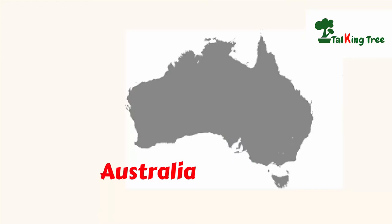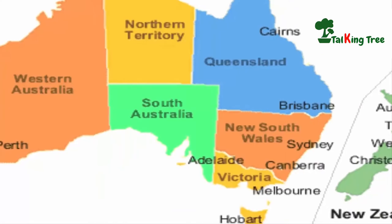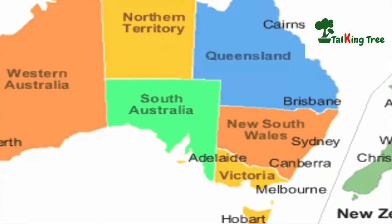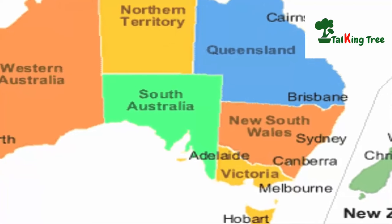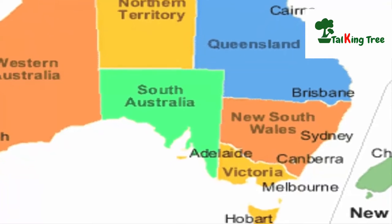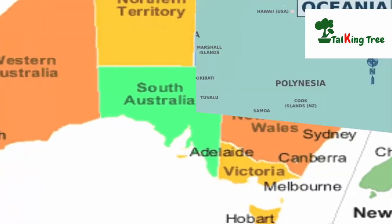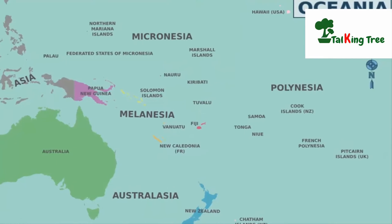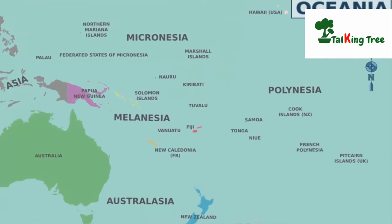Australia. When Australia was first discovered, it was named New Holland by the Dutch. Afterwards, the name officially changed to Australia, also known as Oceania.